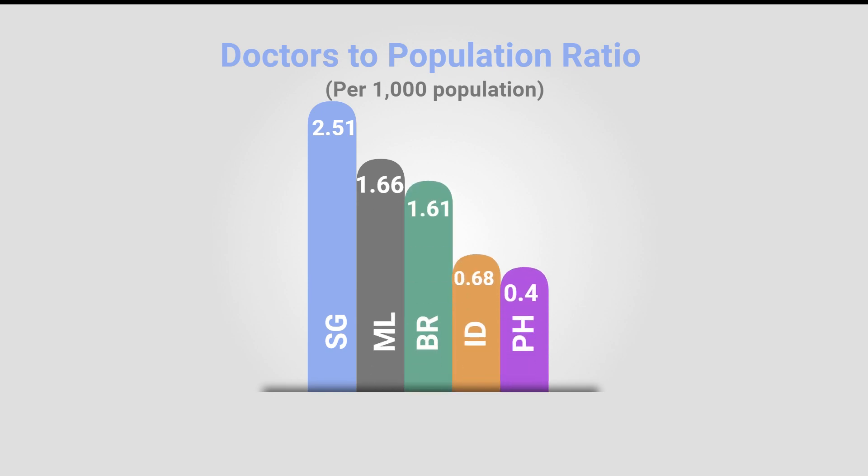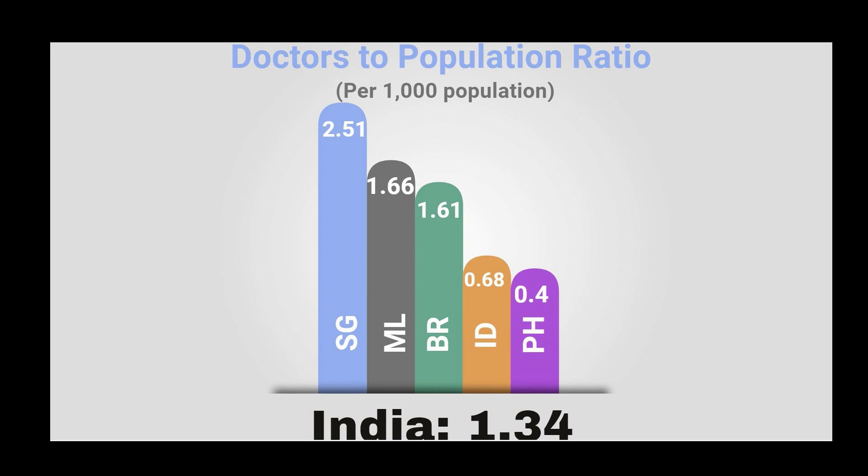In this case, Singapore ranked the highest ratio of 2.51, which means that for every 1,000 people, there are more than two doctors that are ready to provide healthcare. Malaysia ranked the second highest with a ratio of 1.66, Brunei followed with 1.61. Indonesia came next with 0.68, and Philippines placed the last with 0.4.